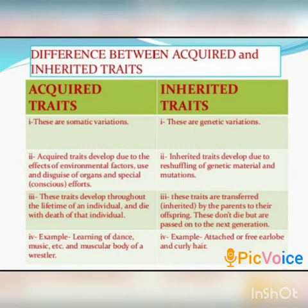In your textbook, one example is given — that is attached or free earlobe. You may be having an attached earlobe or you may be having a free earlobe. That is a character, an inherited trait that is already present in your parent. You got that character from your parent.